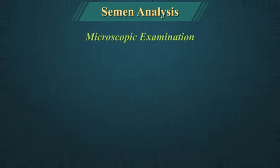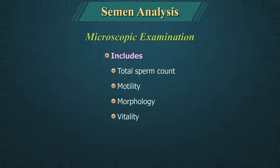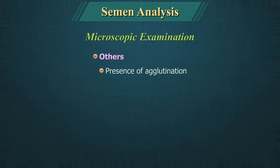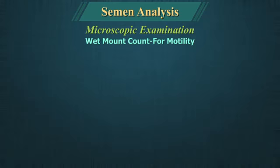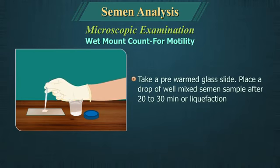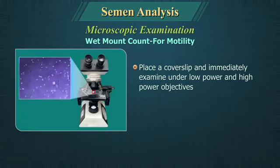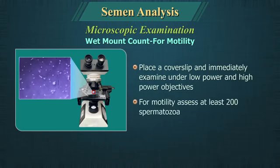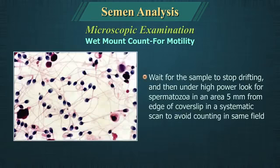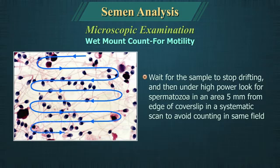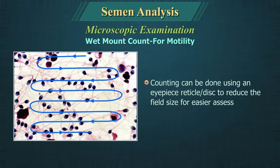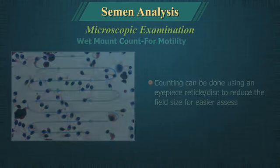Microscopic examination of semen includes total sperm count, motility, morphology, vitality, and others such as presence of agglutination, immature forms, pus cells, and miscellaneous factors. Wet mount cover slip preparation: take a pre-warmed glass slide, place a drop of well-mixed semen sample, place a cover slip, and immediately examine under low power and high power objectives. For motility, count at least 200 spermatozoa. Wait for the sample to stop drifting and then under high power, look for spermatozoa in a systematic scan 5 mm from the edge to avoid counting in the same field.